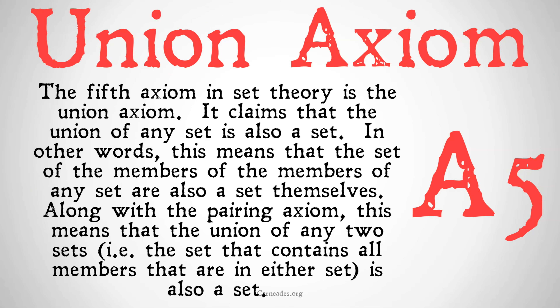The fifth axiom in set theory is the union axiom. It claims that the union of any set is also a set. In other words, the set of the members of the members of any set are also a set themselves. Along with the pairing axiom, this means that the union of any two sets — i.e. the set that contains all members that are in either set — is also a set. And therefore, the successors of individual sets are sets, as we talked about in the previous video. These are the axioms that we need to show that not just the null set is a set, but also all of its successors are sets, at least by our current definition of successorship.